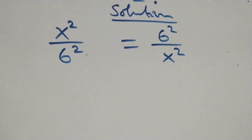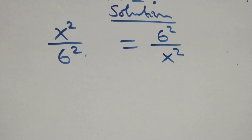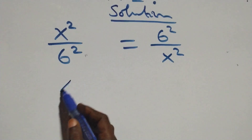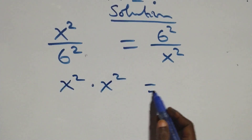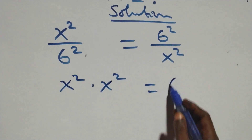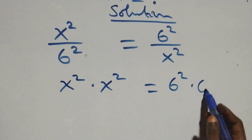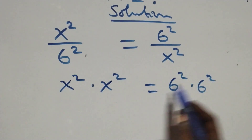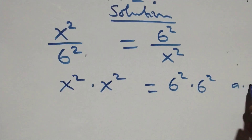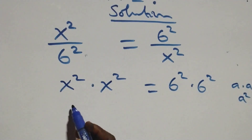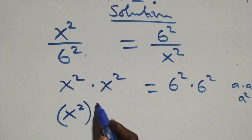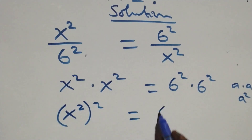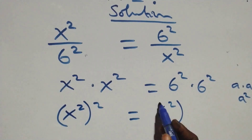The next step: we cross multiply — x squared times x squared, which also equals 6 squared times 6 squared. This is the same thing as multiplying a times a, which is the same as a squared. So we can write this as x squared squared equals 6 squared squared.